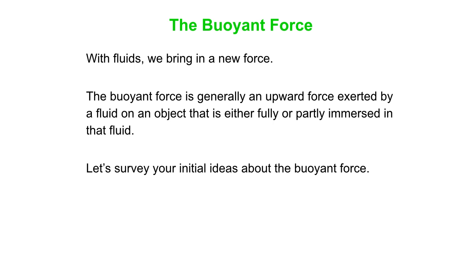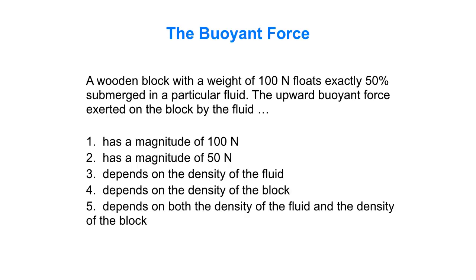We're going to survey your initial ideas about the buoyant force. Here's a question: we have a wooden block with a weight of 100 newtons, and it floats exactly 50% submerged in a particular fluid. You toss the block in a container of fluid and see it floats 50% submerged. What does this tell you about the upward buoyant force exerted on the block by the fluid? The choices are: 100 newtons, 50 newtons, it depends on the density of the fluid, it depends on the density of the block, or it depends on both densities. Pick your answer and we'll discuss.